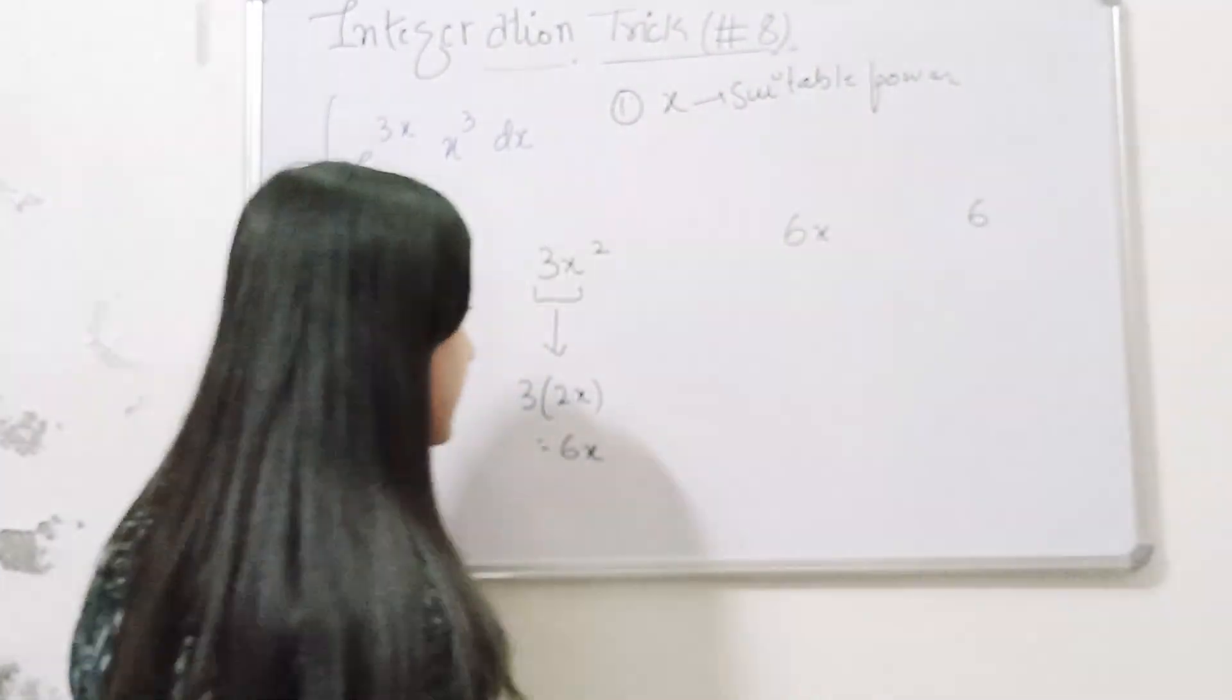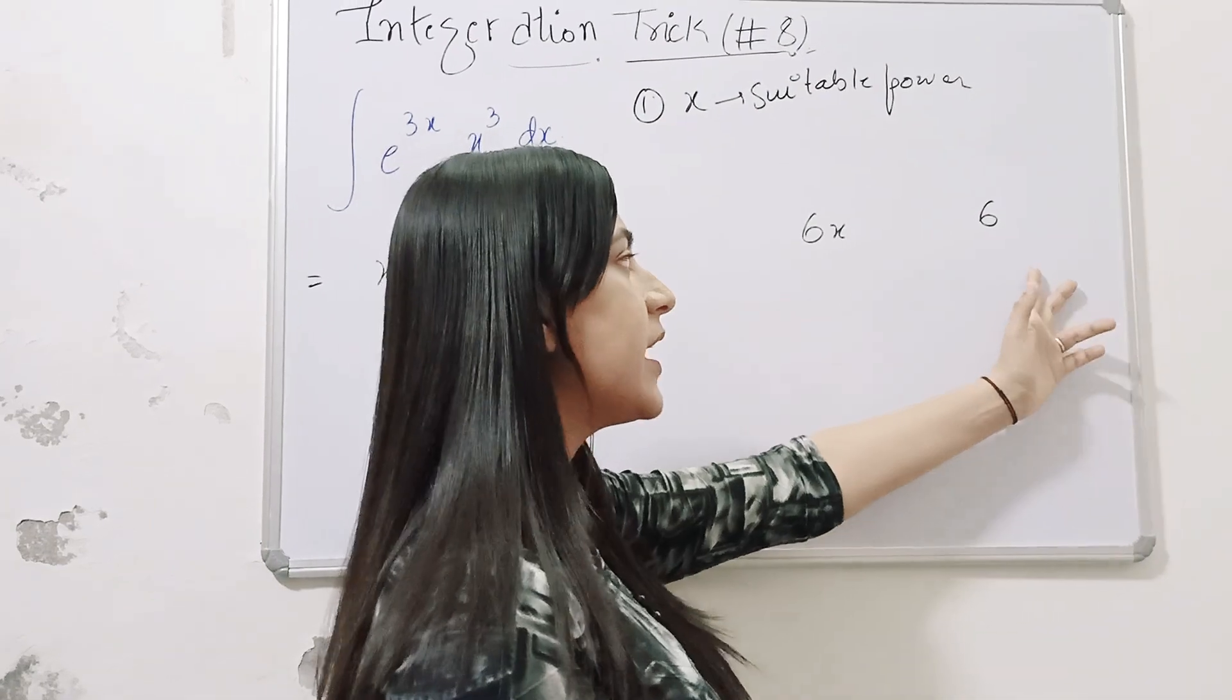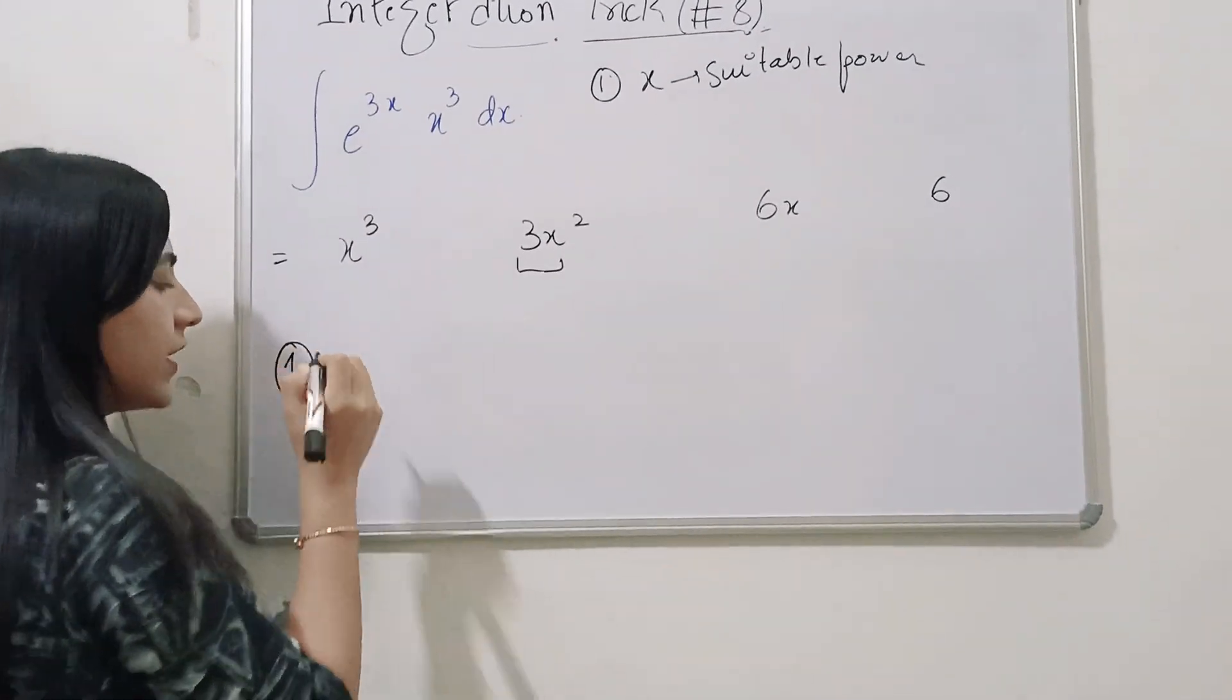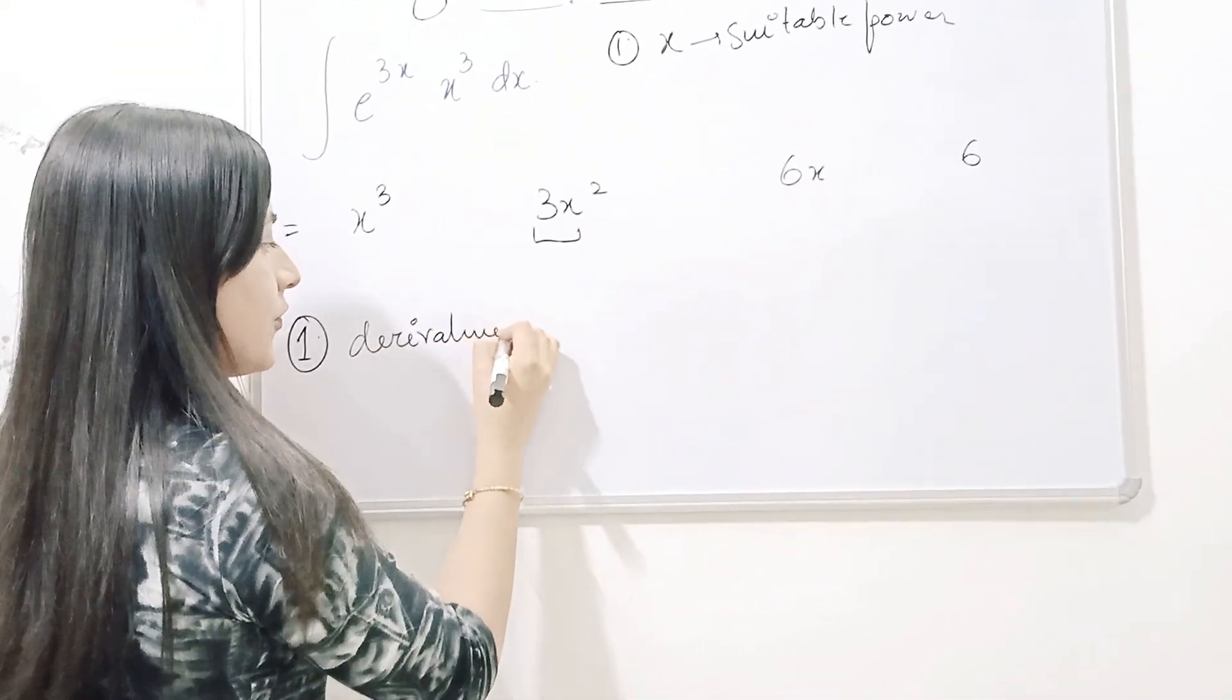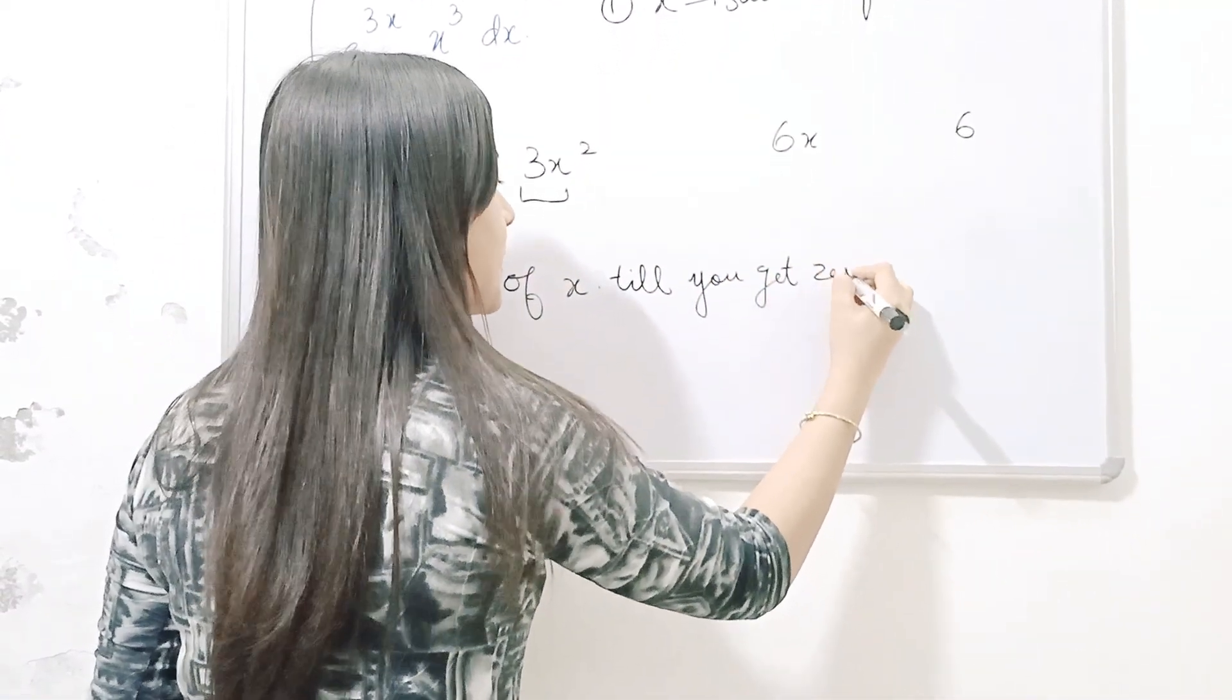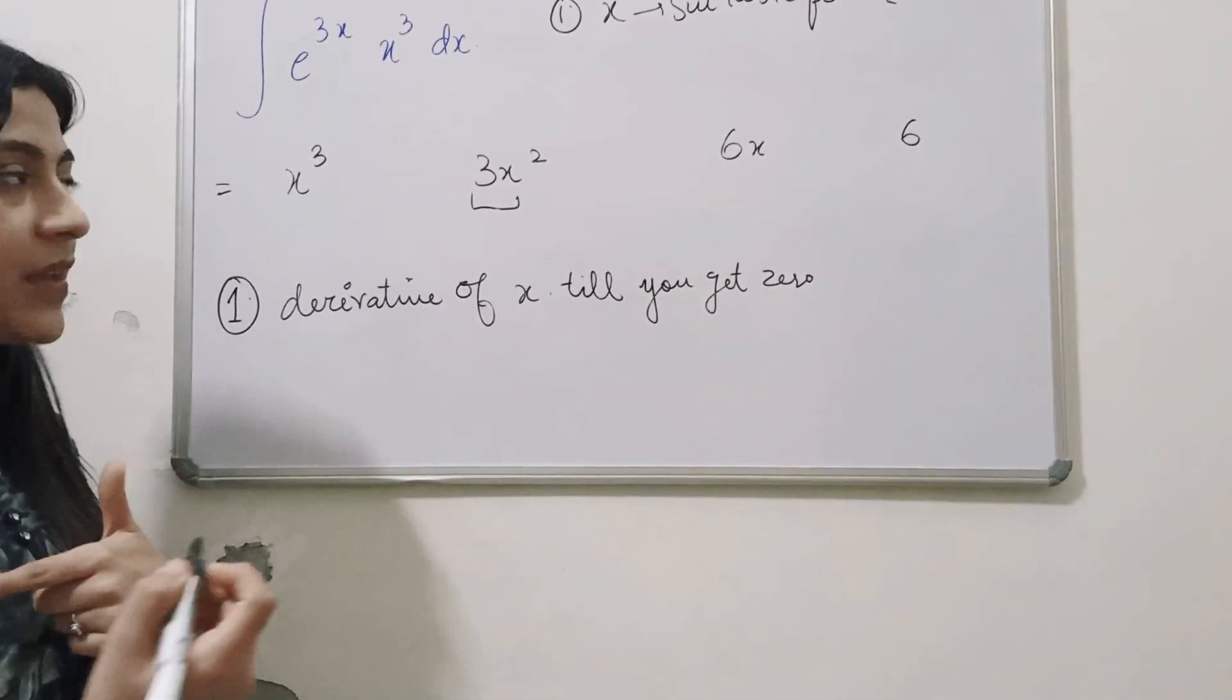Iska maatlab, aap logoko x ki jitni wazhi power ho jayye, tab tuk aap logoko derivative karte jana hai, chab tuk aapke baas last pe constant term nahi bach jati, jiska derivative 0 nahi bach jata. So then the algorithm dekho, the first is, the very first step is the derivative of x, x ka derivative, till you get 0, jab tuk aapke baas end term me 0 nahi aaza ta, tab tuk aapko x ka derivative karte jana hai.